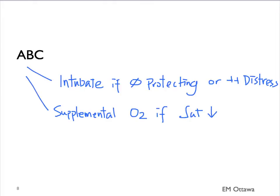What about for circulation? What if the patient is hypotensive or tachycardic? We need to give them IV fluids. Crystalloids such as normal saline and ringers lactate are both good choices.